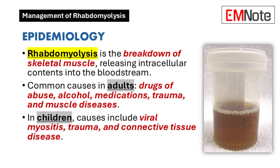Rhabdomyolysis is a condition where skeletal muscle breaks down, releasing intracellular contents into the bloodstream. This can lead to myoglobinuria, the presence of myoglobin in the urine. The condition can be triggered by various factors, including trauma, drug use, infections, and intense physical activity.